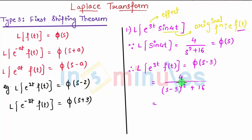So just expand it, that comes 4 divided by s square minus 6s plus 3 square which is 9, 9 plus 16 that becomes 25.